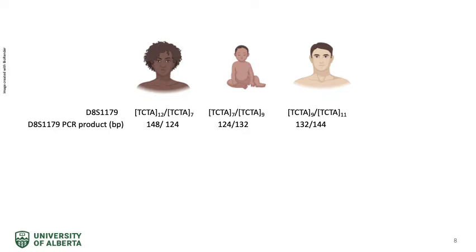Looking back at our family, the mother is heterozygous with 12 and 7 repeats, resulting in PCR products of 148 and 124 base pairs. The father has 9 and 11 repeats, resulting in products of 132 and 144 base pairs. The child inherited the maternal STR with 7 repeats and the paternal copy with 9 repeats, giving products of 124 and 132 base pairs. By amplifying multiple STRs, we can establish a genetic relationship between parents and child.